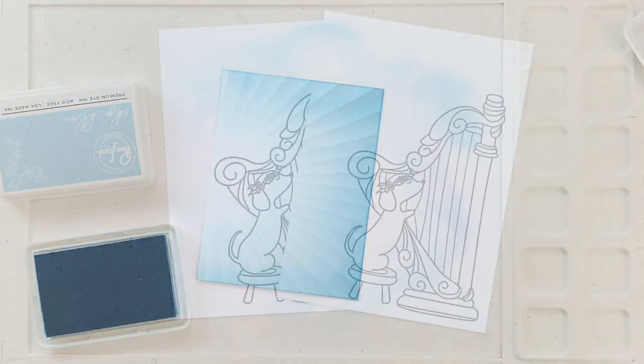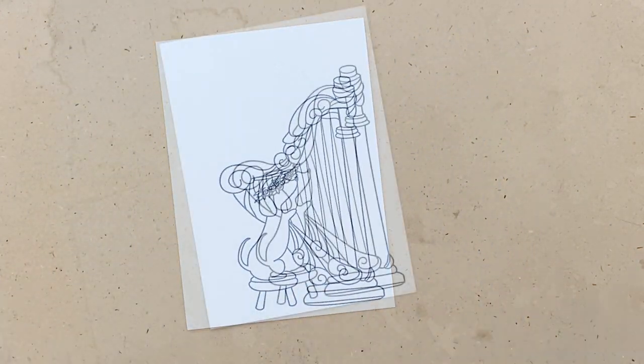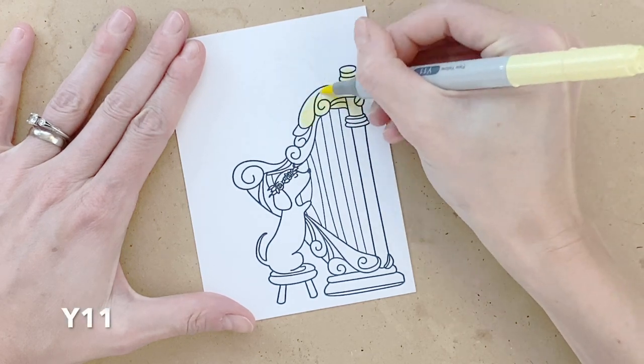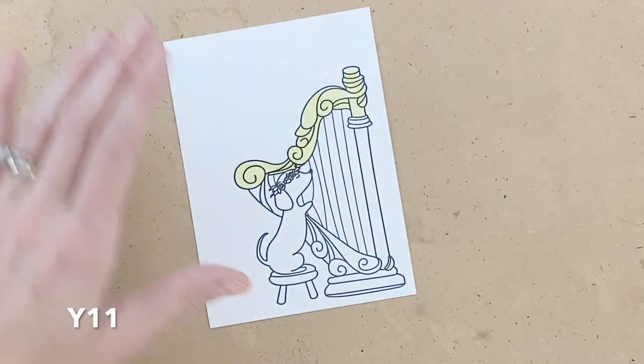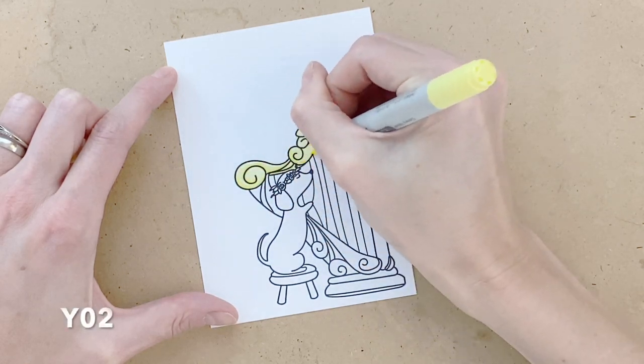Now that I finished ink blending I went ahead and stamped two of these harps with the puppy in memento tuxedo black and now I'm going to copic color one of these. The copic markers that I'm using are on screen so you can follow along. I'm starting with a group of yellows. I started with Y11 my lightest yellow.